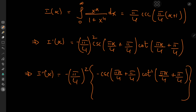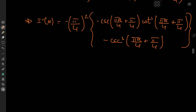We also get cosecant times the derivative of cotangent, which is −cosecant squared, giving −cosecant cubed. Factoring and applying the chain rule gives another factor of π/4, so I''(α) = (π/4)³ · [cosecant(πα/4 + π/4) · cotangent²(πα/4 + π/4) + cosecant³(πα/4 + π/4)].